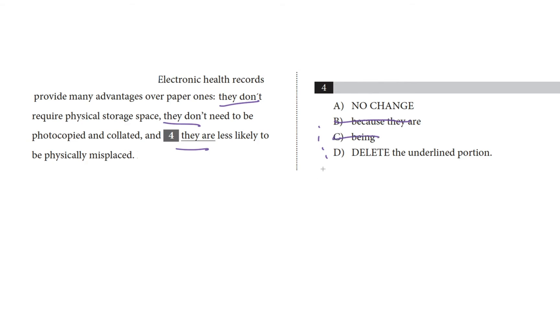Choice D, delete the underlined portion. Alright, let's see what this does. They don't need to be photocopied and collated, and less likely to be physically misplaced. This doesn't match that they verb structure. So, bye bye D. And that leaves us with A, the one choice that maintains a parallel structure with the other items on the list.